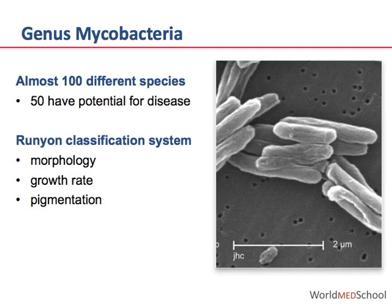The genus Mycobacteria comprises not only the members of the Mycobacterium tuberculosis complex, but almost 100 other different mycobacterial species, referred to as non-tuberculous mycobacteria, of which approximately 50 have the potential for causing human disease. The Runyon system of classification uses morphology, growth rates, and pigmentation to classify the organisms within the genus.